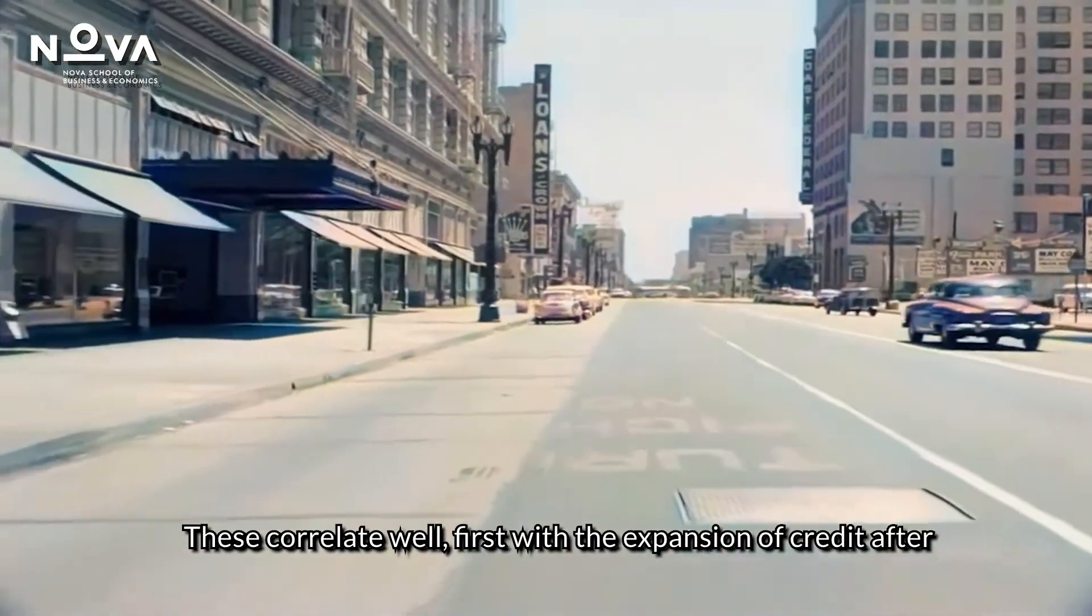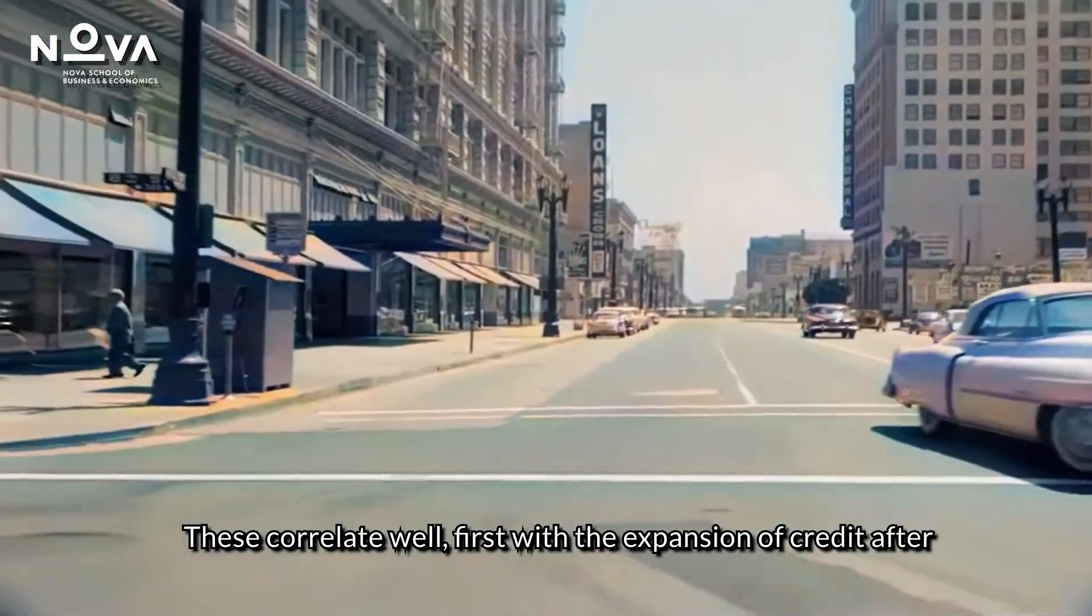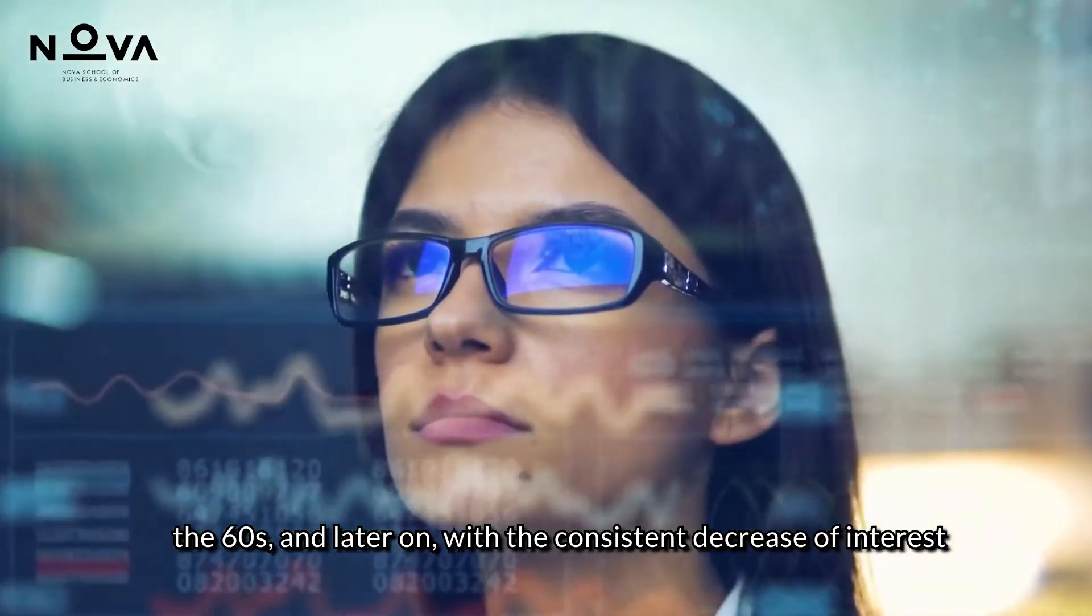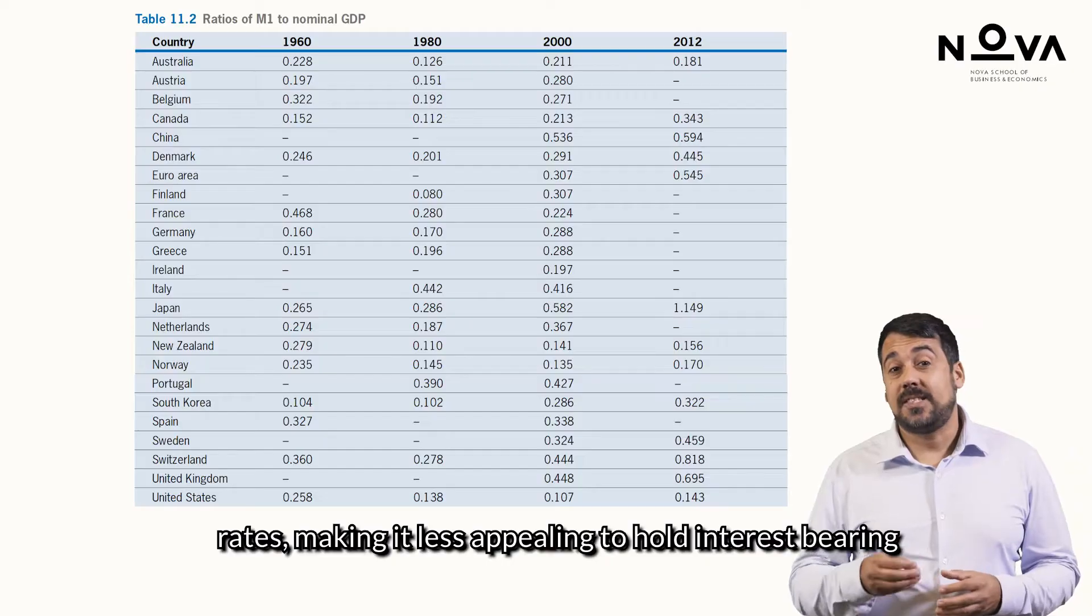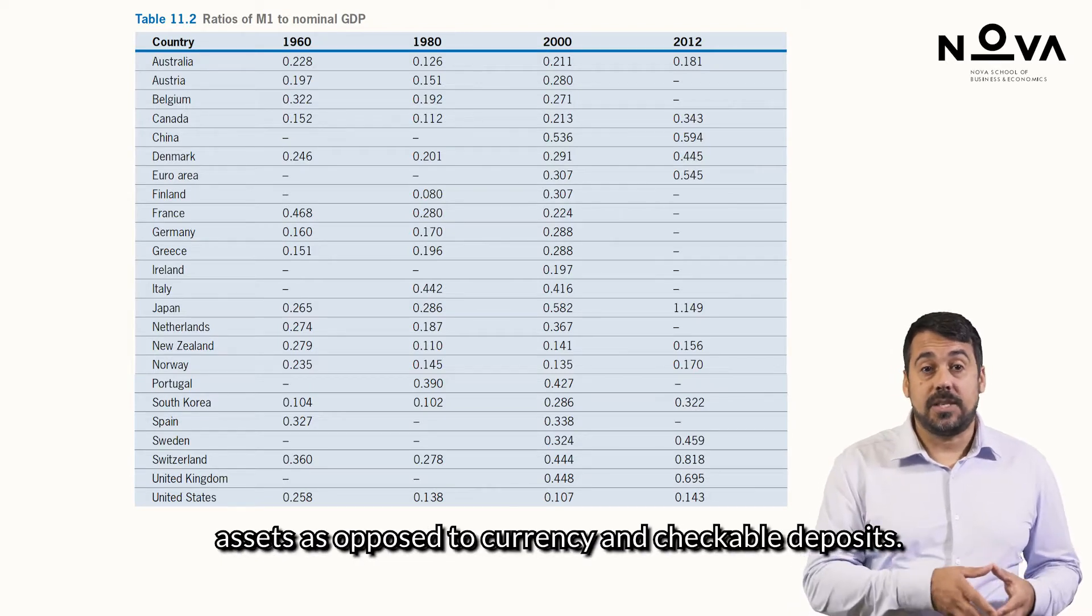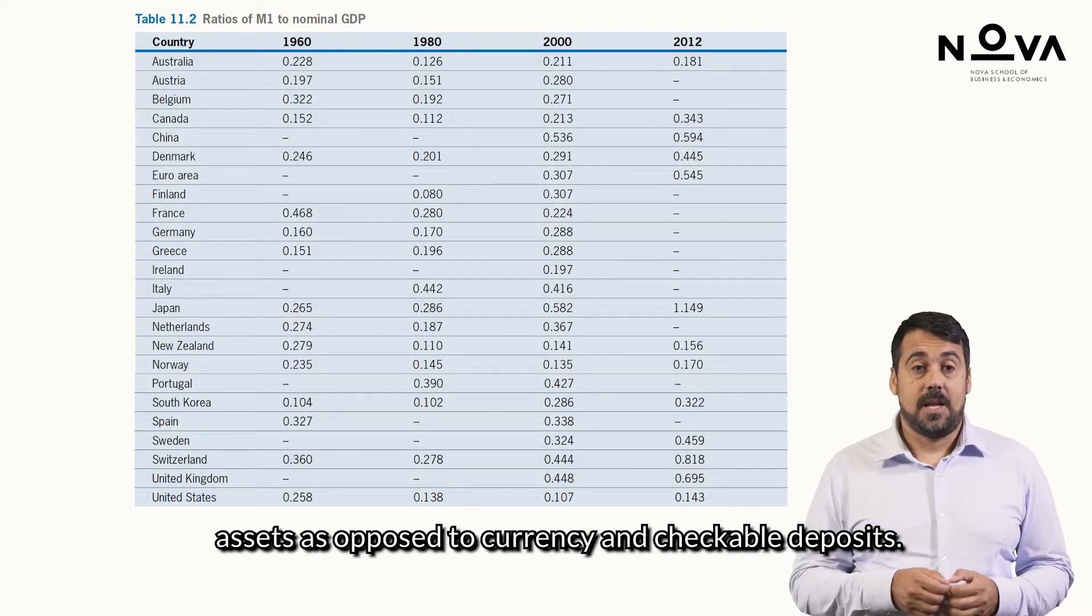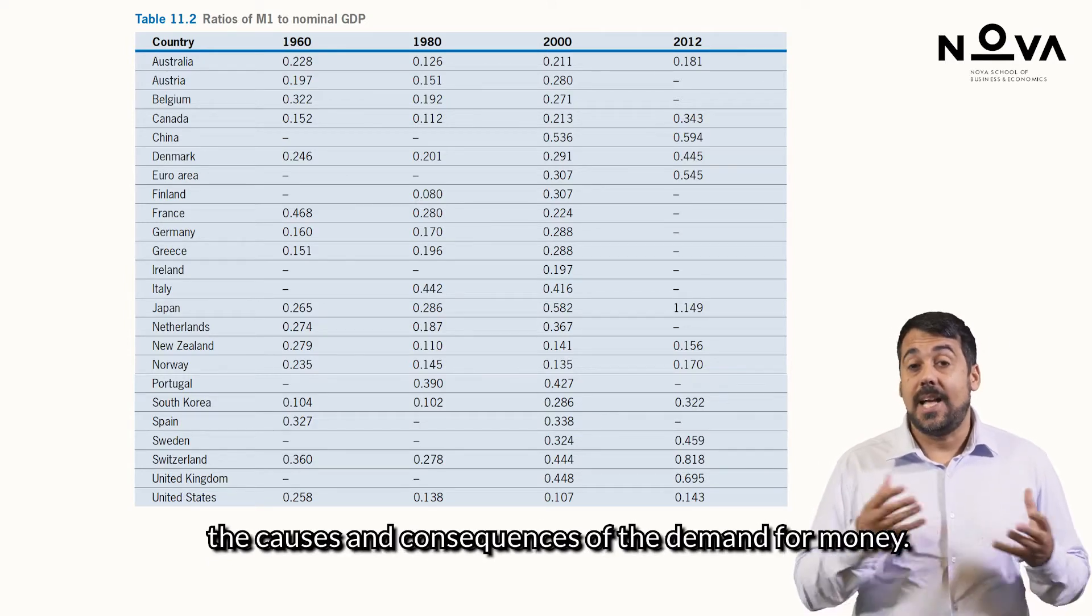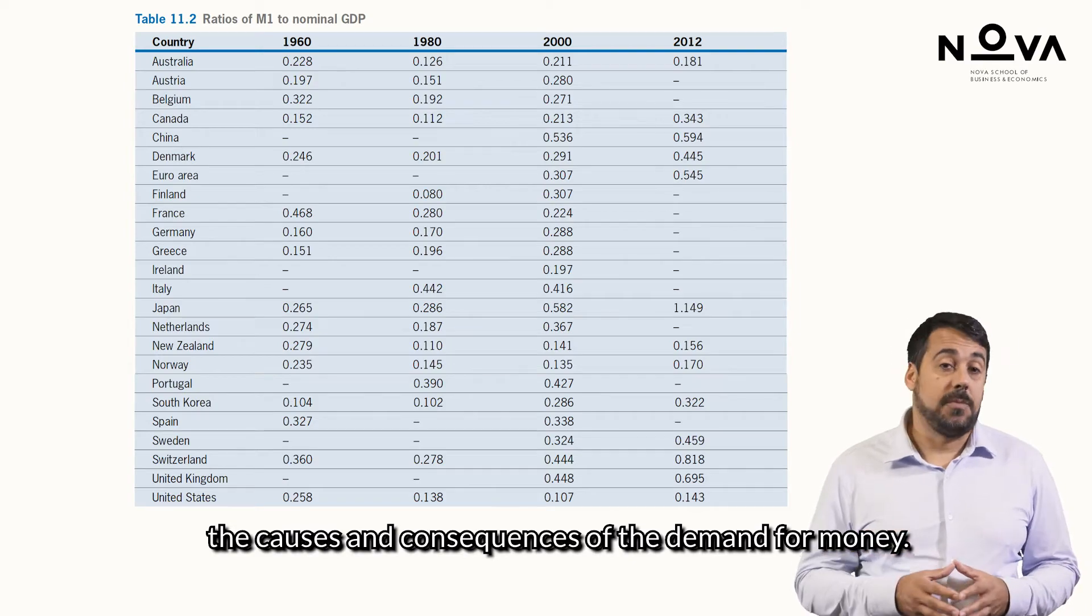These correlate well first with the expansion of credit after the 60s, and later on with a consistent decrease of interest rates, making it less appealing to hold interest-bearing assets as opposed to currency and checkable deposits. These facts motivate us to develop the framework to analyze the causes and consequences of the demand for money.